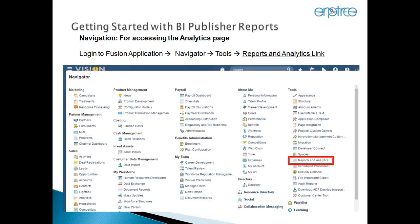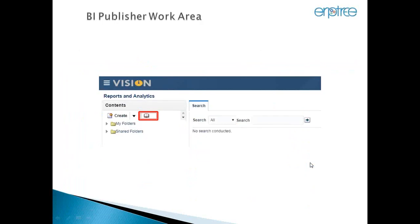For accessing the BI Publisher report, we have to log in to the Fusion application. There is a task called Reports from the Navigator — we go to Reports and Analytics. There are two ways to access the BI Publisher report: one is to log in to the Fusion application and go to Reports and Analytics, and from there click the bookmark which will take us to BI Publisher, or directly we can open BI Publisher.